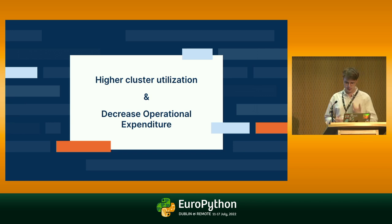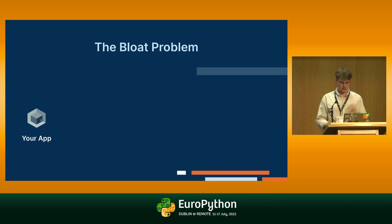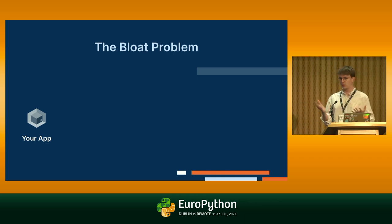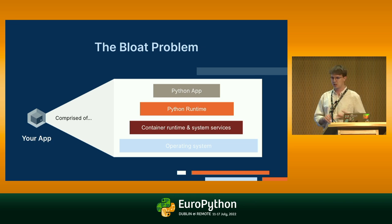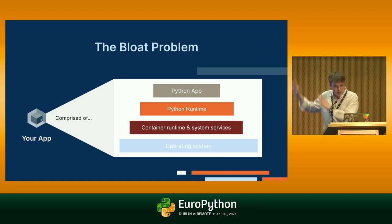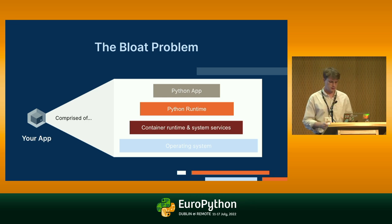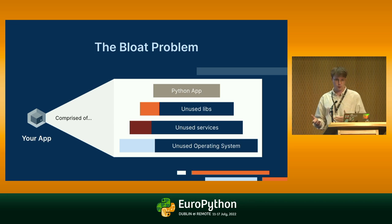That's the premise of today's talk — I'm going to go into how we can achieve this with one strategy for the cloud. Let's talk about the bloat problem that applications have in the cloud. The bloat problem is that you have your application comprised of your Python app, the Python runtime, the container runtime if you're running containers, or even just the process manager of the operating system. So you have a very big stack.